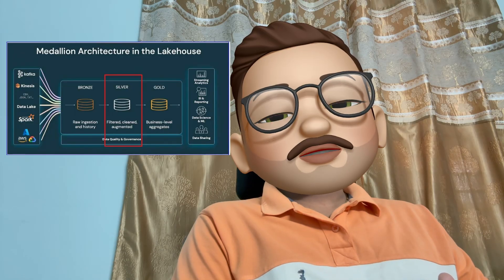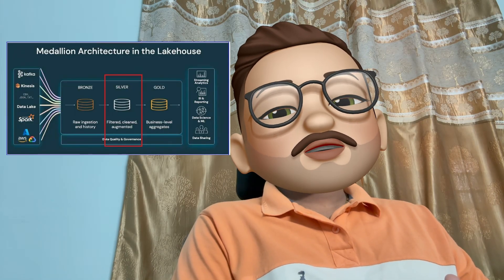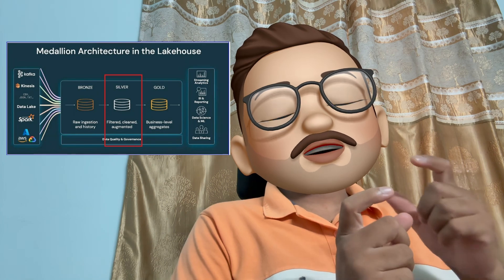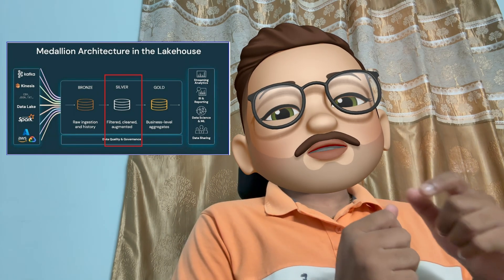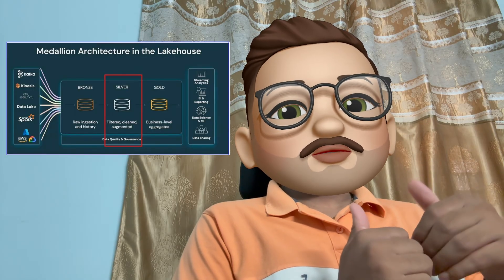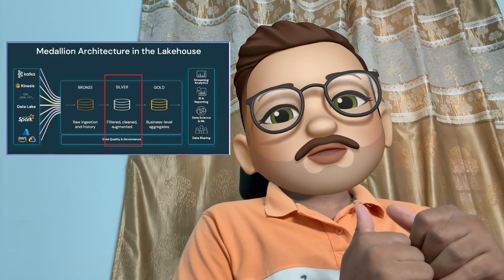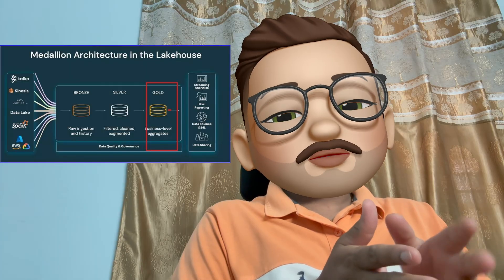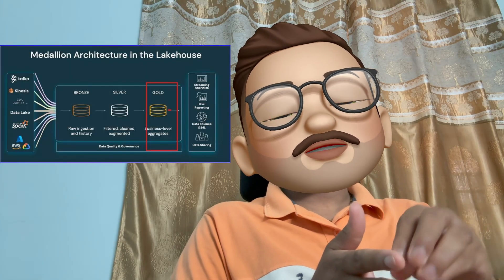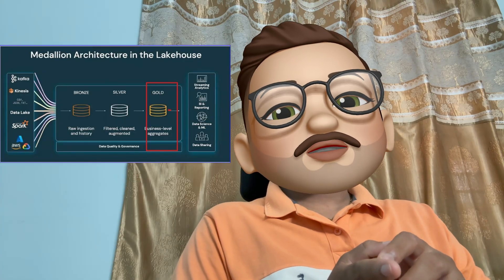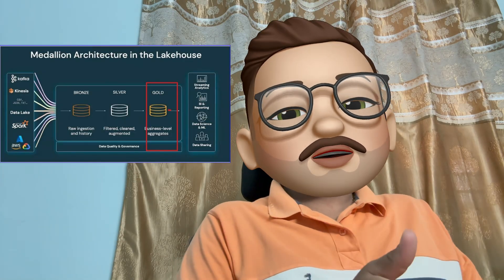Once the data is confirmed to be in good shape, we trigger another job that loads data from the bronze layer to the silver layer. In the silver layer, we maintain clean and filtered data. We also perform business-level quality checks — for example, verifying values in particular columns fall within expected ranges and that all fields like object codes are valid. If everything passes, we trigger another job to pick up data from the silver layer and load it to the gold layer.